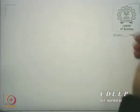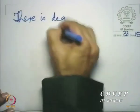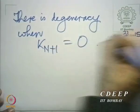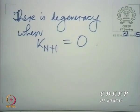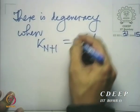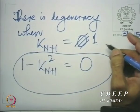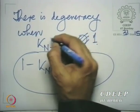There is degeneracy when k_{n+1} equals 0 — that means in this lattice recursion at any stage, if you find that k turns out to be 1, then you have a degeneracy. You cannot realize it with the lattice structure. I am sorry — I meant to say 1 minus k_{n+1}² equals 0. That is correct. I would prefer to say k_{n+1}² equals 1.